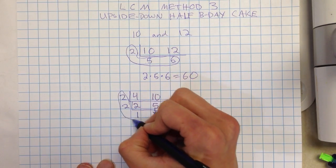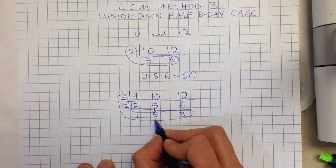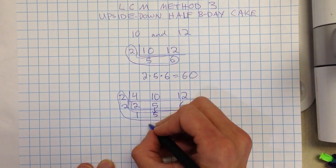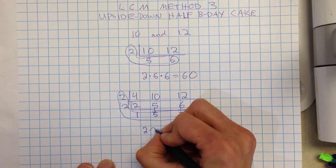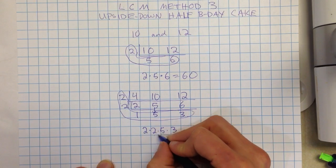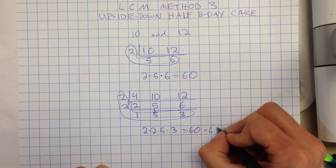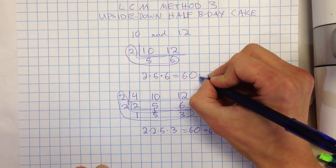Then I would do my L-shaped circle thing, and I have 2 times 2 times 1 times 5 times 3. 2 times 2 times 5 times 3. 2 times 2 is 4. 4 times 5 is 20. 20 times 3 equals 60. So 60 is my LCM for both of these.